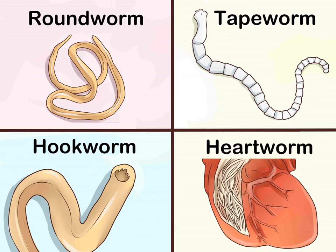Puppies should be wormed as a matter of routine. Tapeworms are caused by a dog eating vermin already infected with tapeworm, or from fleas that contain tapeworm eggs. Thus hunting dogs or dogs with a flea infestation are likely to pick up tapeworms. Hookworms and whipworms thrive in damp soil, and the dogs most at risk are those kept on grass runs, especially in warm, humid conditions. These infections are more common in kenneled dogs that have access to communal grassy runs.